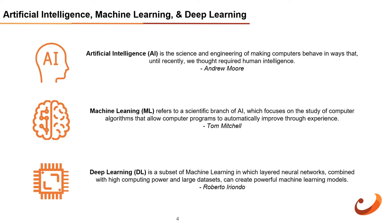Machine learning is an application of AI. It is the process of teaching a system to accomplish a specific task by processing a very large amount of data, predicting the correct answers, and improving from experience. Deep learning is a subset of machine learning in which layered neural networks combined with high computing power and large datasets can create powerful machine learning models.